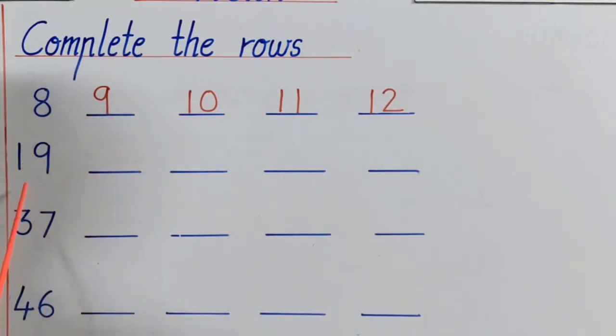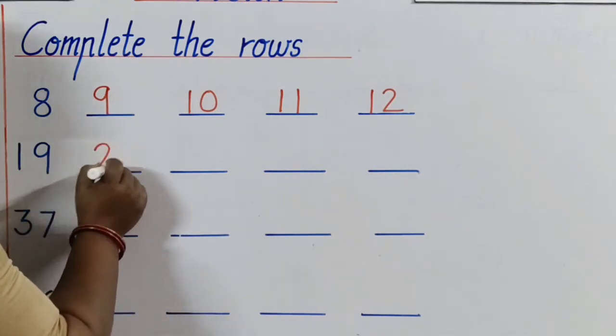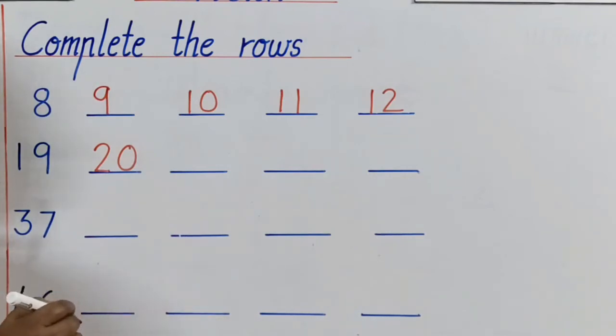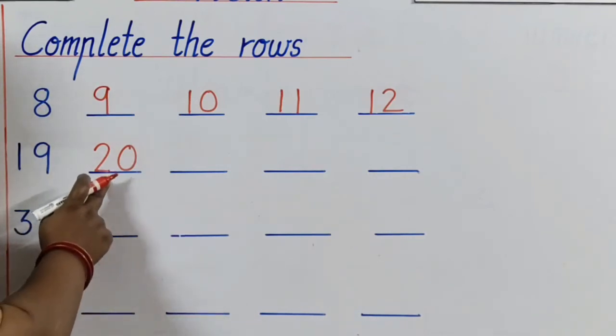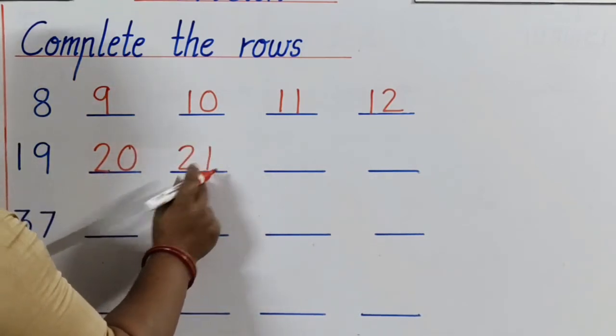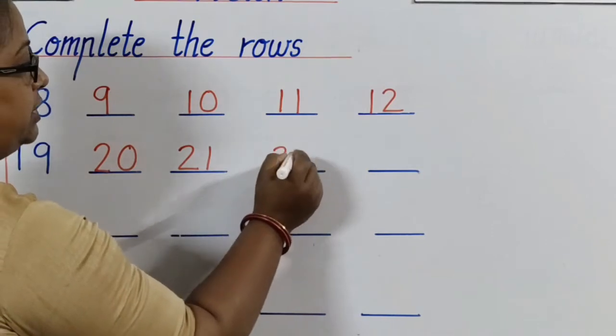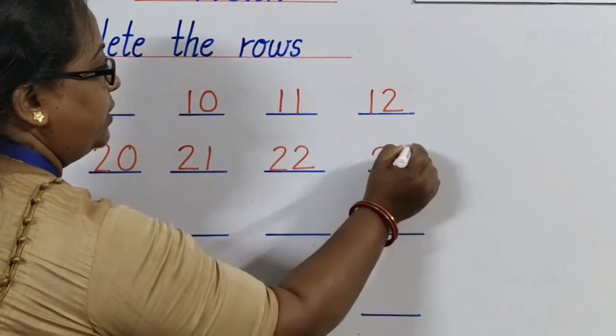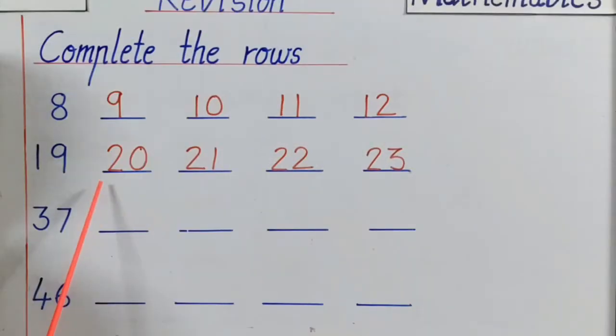The next number is 19. Yes. And after 19? Yes. 20. Very good. I hope you all are saying the answer. After 20? 21. After 21, 22. After 22, 23. Now we have completed this line also.